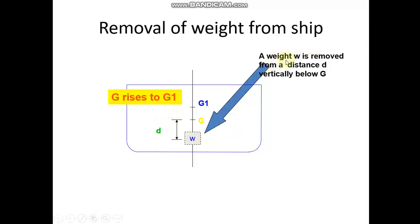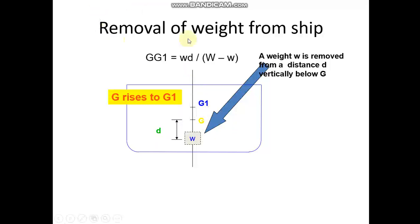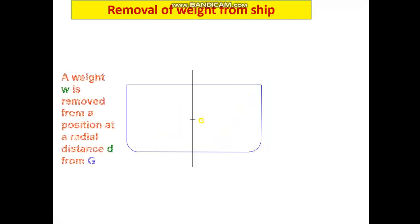A weight w is removed from a position below the center of gravity. The shift of center of gravity GG1 can be calculated by the same formula: w into d by W minus w. The formula looks the same, but the difference is that GG1 — the shifting of G to G1 — has gone in a different direction. Previously G1 was below G; in this case G1 is above G. Here, weight w is removed from a position at a distance d radially away from center of gravity.